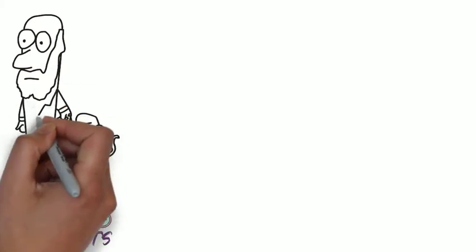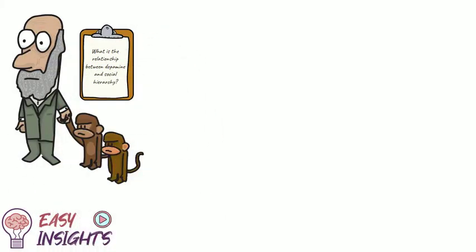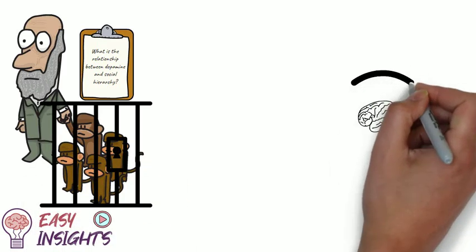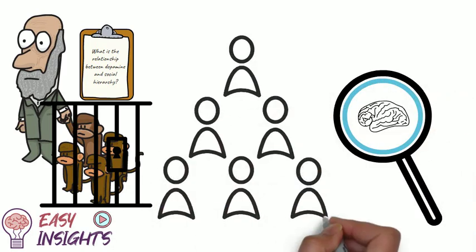But what does this have to do with monkeys? Well researchers wanted to understand the relationship between dopamine and social hierarchy, so they took monkeys in groups of four and caged them. They then scanned their brains to understand dopamine levels and observed their standing in the social hierarchy.